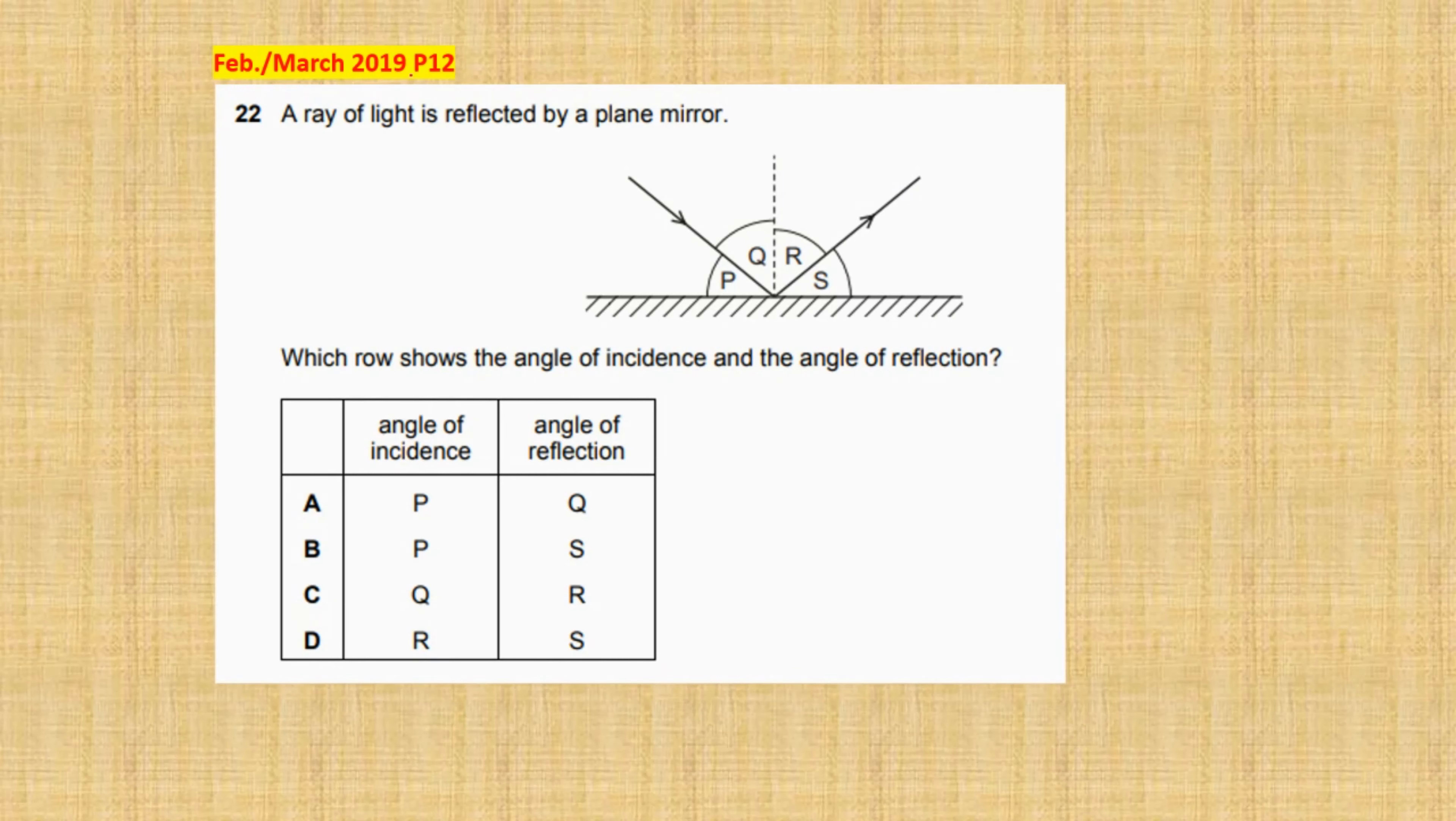February March 2019 Paper 12, Question 22. A ray of light is reflected by a plane mirror. Which row shows the angle of incidence and the angle of reflection? Okay, so the one which is on the left is the incoming light ray.